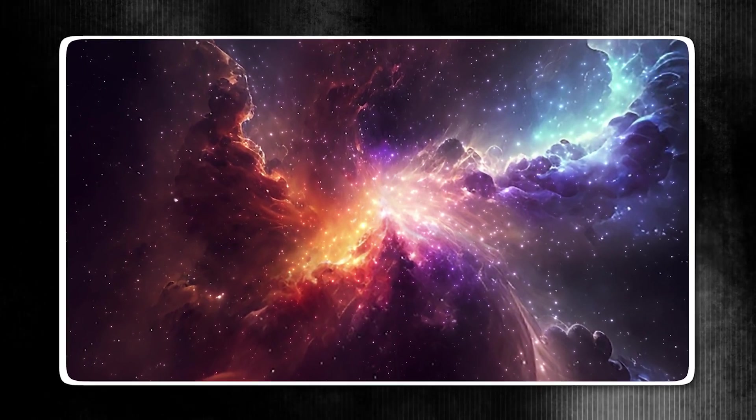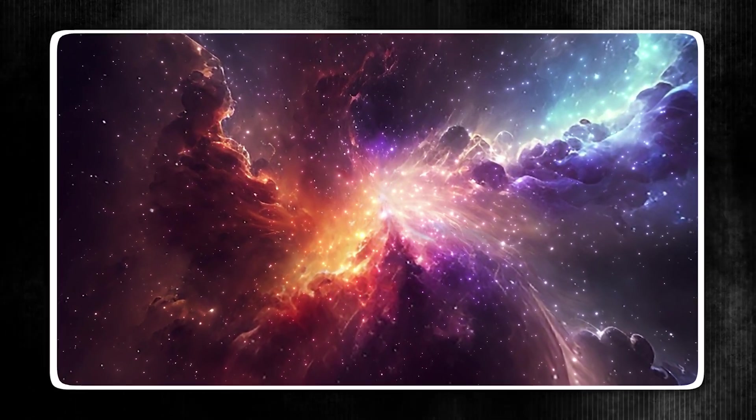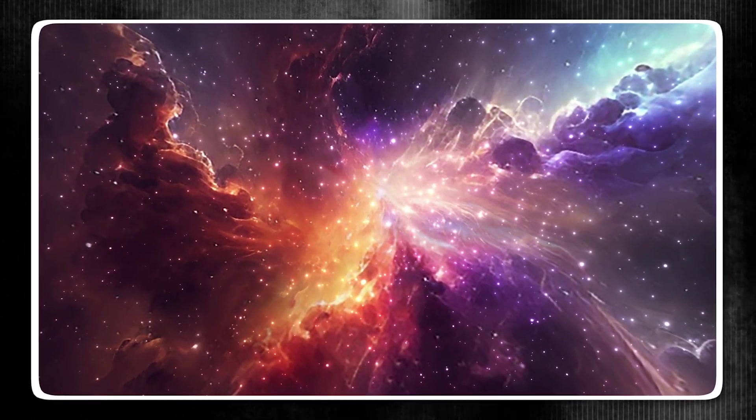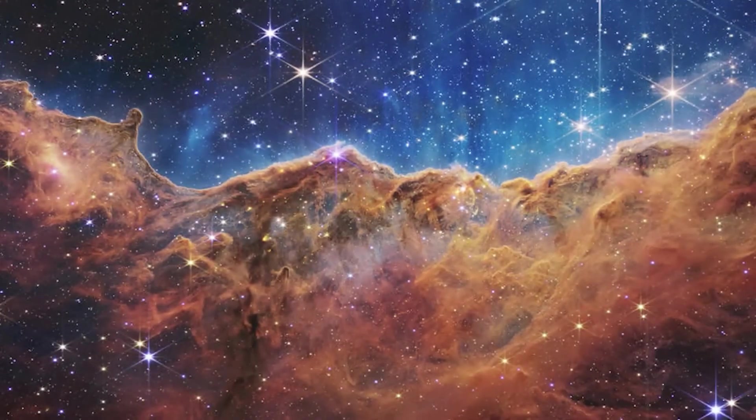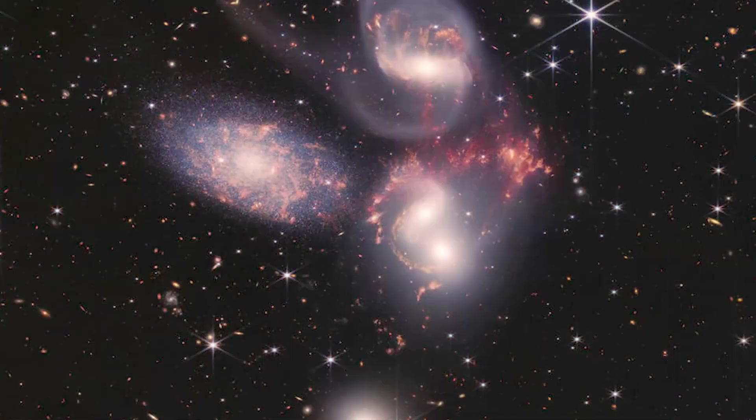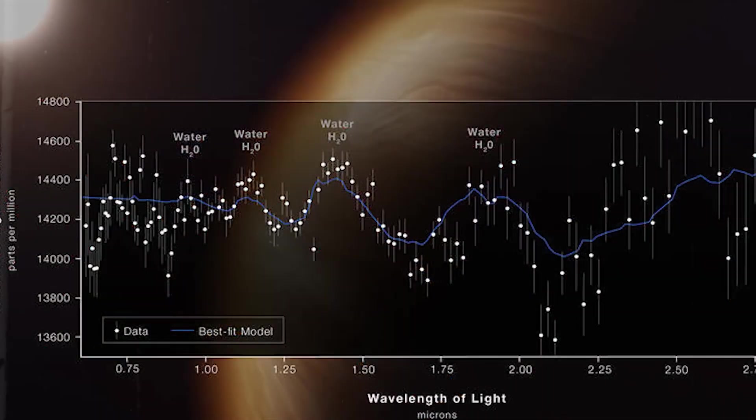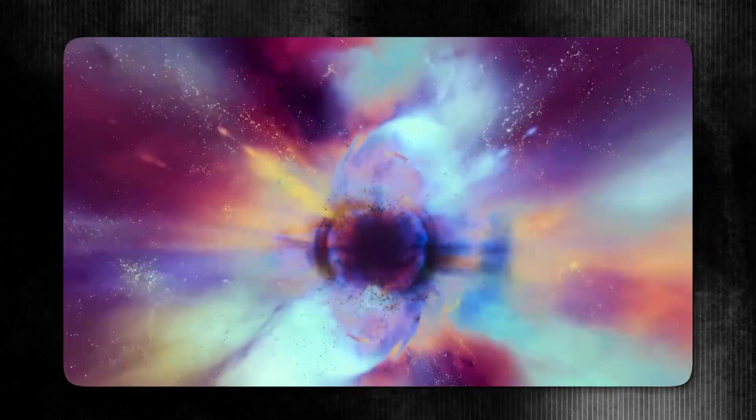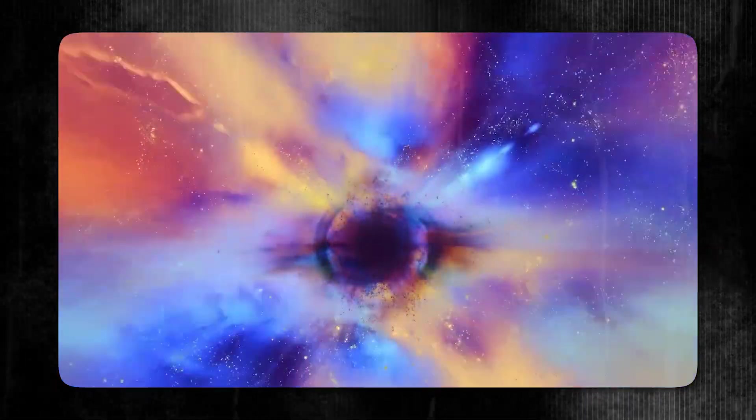Among these galaxies is one of the oldest ever detected. Its light, emitted at the dawn of the universe, has only now reached Earth after a journey of 13.1 billion years. This faint red dot, barely noticeable amidst the cosmic tapestry, was born when the universe itself was in its infancy, just a few hundred million years after the Big Bang.